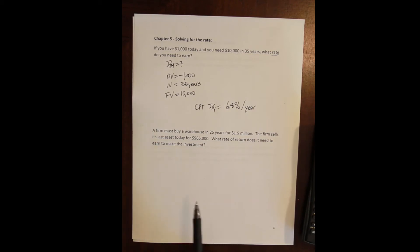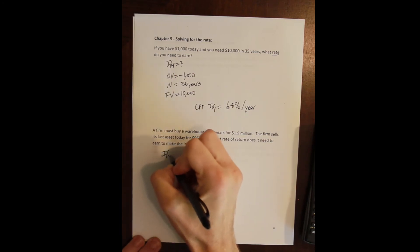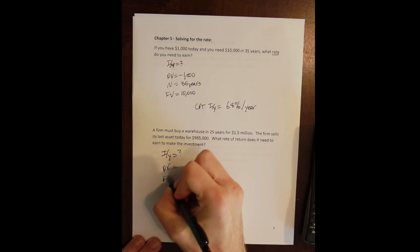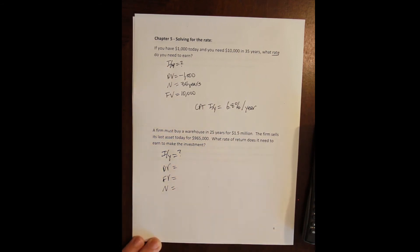So again, we're solving for the rate. We want to know how much we have to earn if we're going to invest almost a million dollars and turn it into a million and a half in 25 years. We want to solve for IY. I have my present value, I have my future value and I have my N, the number of periods.